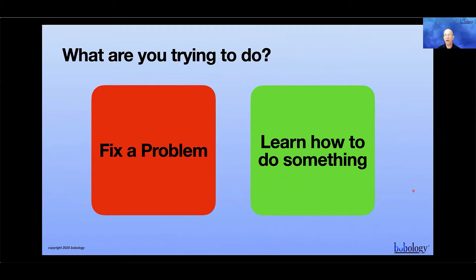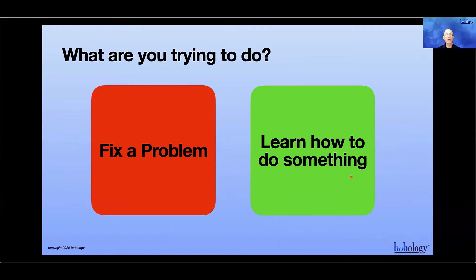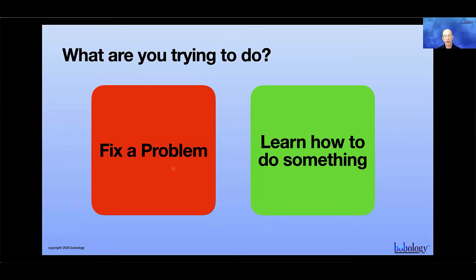The next step is figuring out what you're trying to do. There's a difference between fixing a problem and learning how to do something. Learning how to do something means: I don't know how to register people for Zoom, I don't know how to change the font on a document, I don't know how to bookmark a website. Fixing a problem means something's not working right — like losing your internet connection, or trying to email somebody and the email doesn't go through.